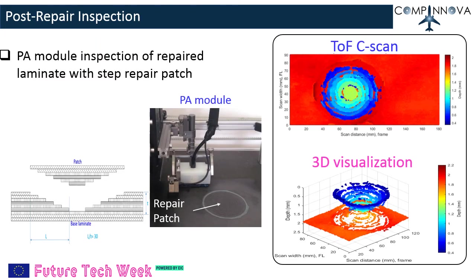Post-repair inspection: the PA module performance was also assessed on a repaired laminate using an XY manipulator for scanning. It was found that the repaired surface needs to be smoothed for proper contact of the wedge with the surface of the laminate. The quality of repair is evaluated based on the C-scan image, and any poor curing of the composite can also be observed with the 3D visualization routines.